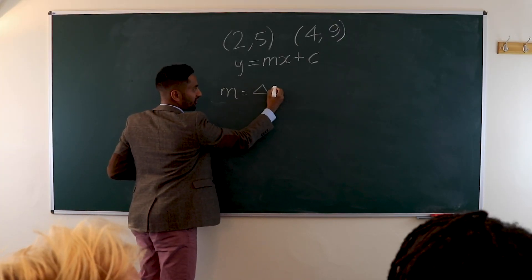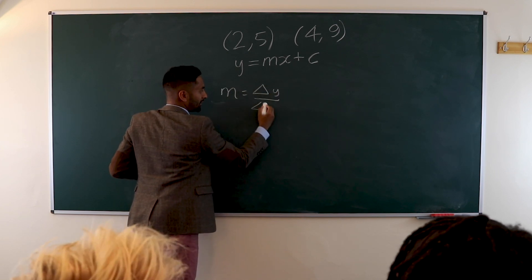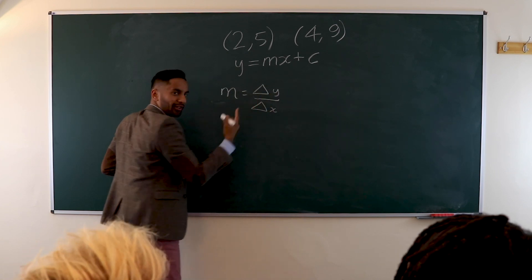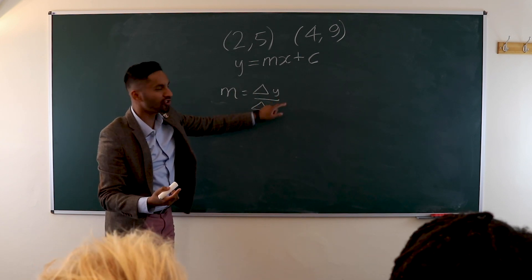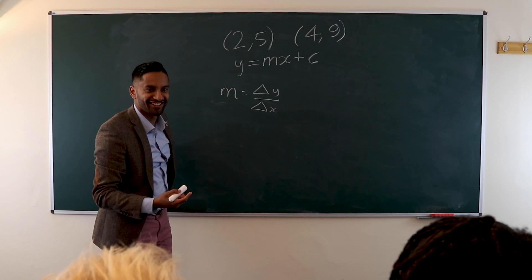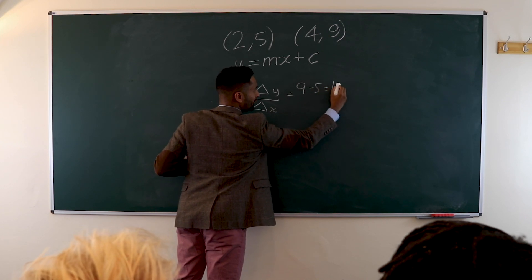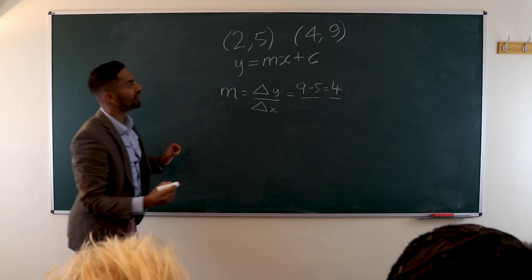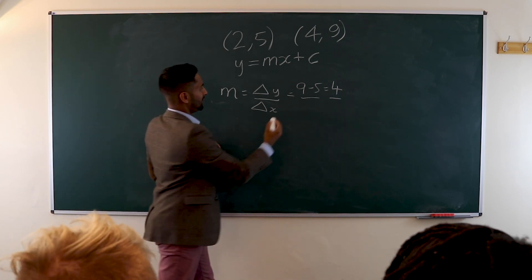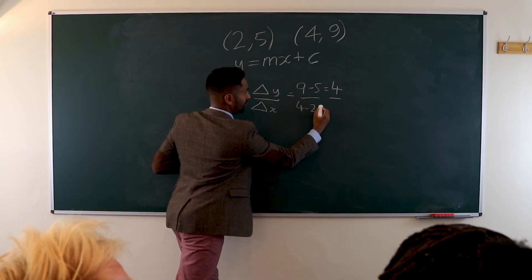The way to work out the gradient using those two points is to take the difference in y — the change in y — over the change in x. The change in y goes from 5 to 9, so the change is 4: 9 minus 5 equals 4. And then the change in x is 4 minus 2, which is 2. And 4 divided by 2 is going to be 2. So M is 2, and the gradient is 2.